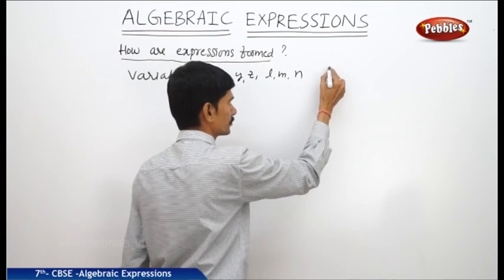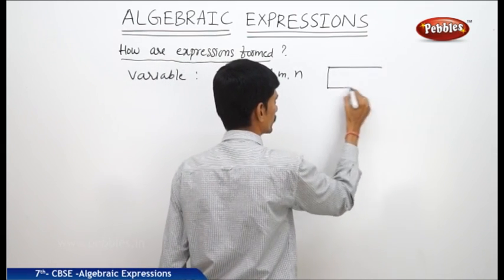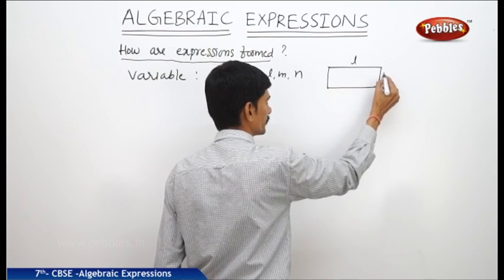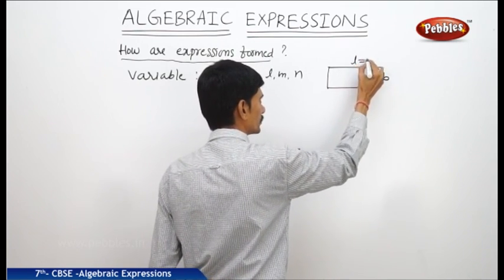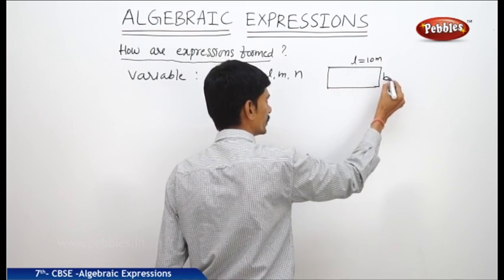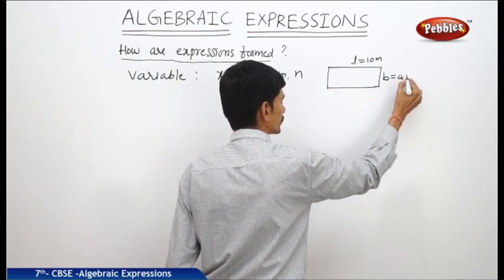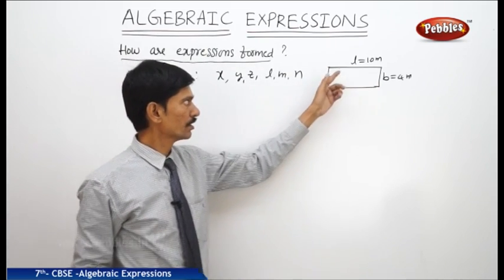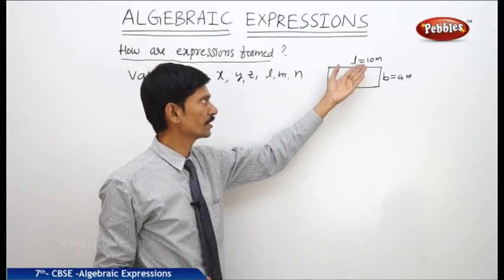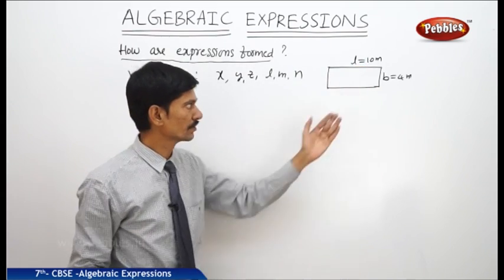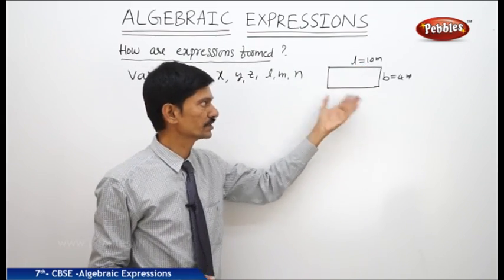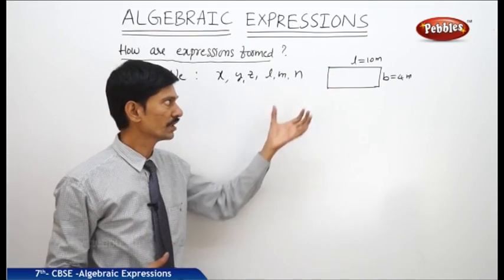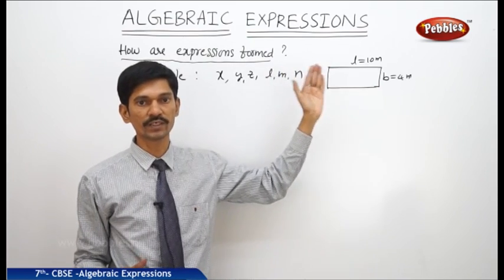For example, to find the area of a rectangle whose length is l meters and breadth is b meters: if l value is 10 meters and breadth is 4 meters, then area of the rectangle A equals l into b. But here, l is always may not be 10 meters and breadth b also may not always be 4 meters. So l and b values can be changed, meaning the values of variables may be changed.